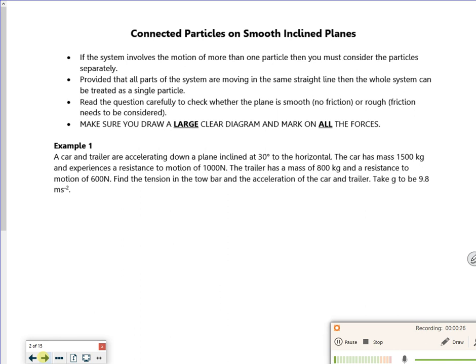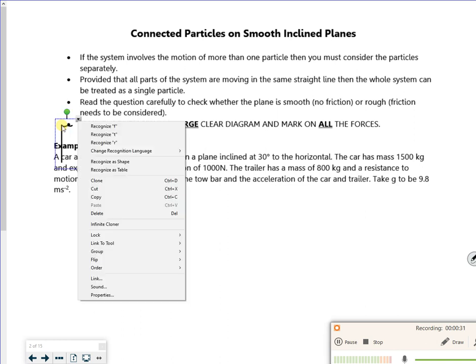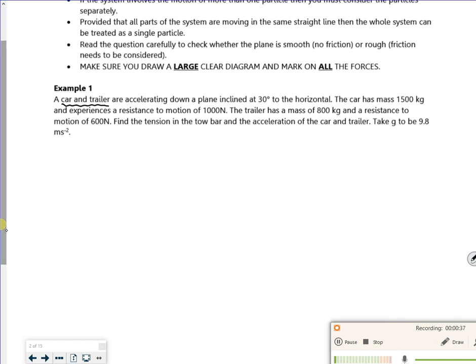Let's have a look at this then. So it says example one, a car and trailer. We did them last year. So we should hopefully be able to zip on with this one but it's on an incline. So it says a car and trailer are accelerating down a plane inclined at 30 degrees. Let's draw a picture. So there's my plane, there's my 30 degrees, it's a car and a trailer.